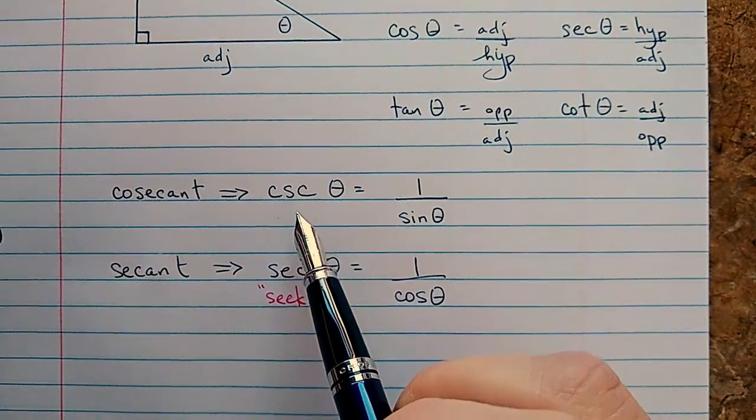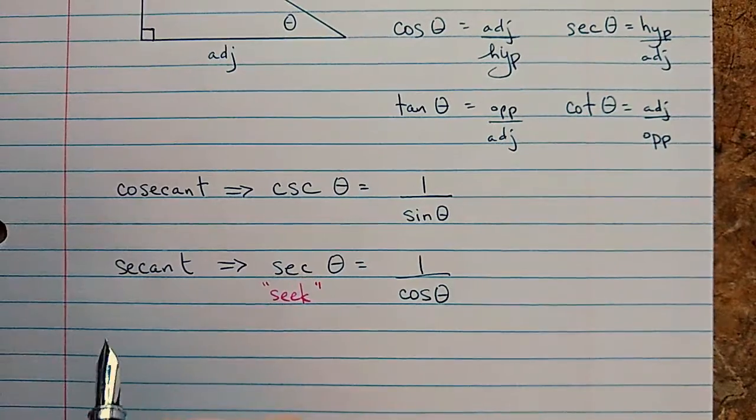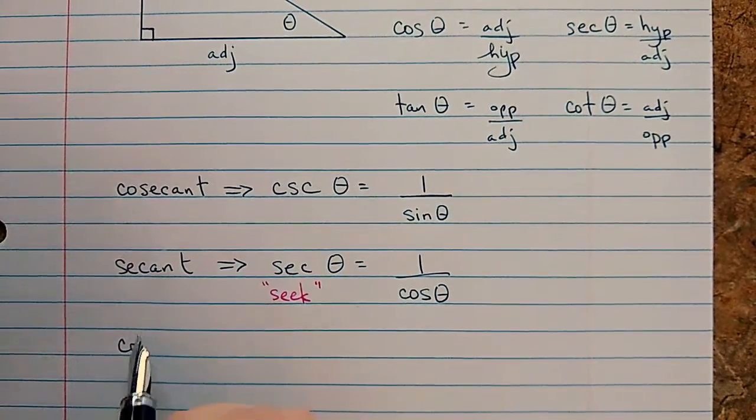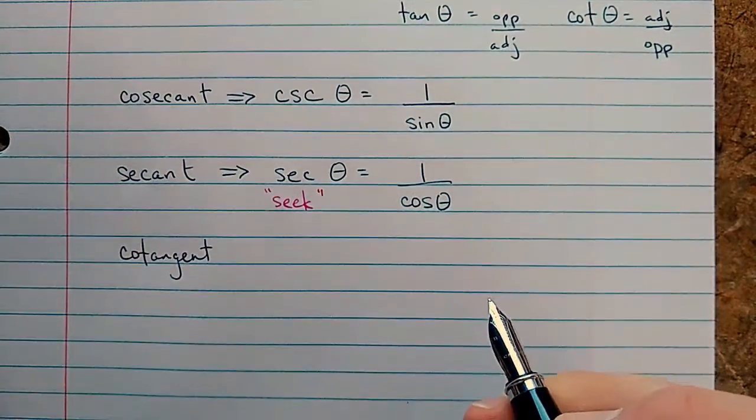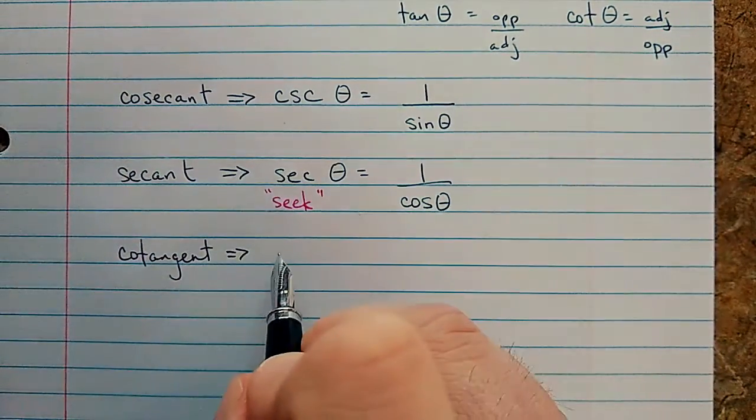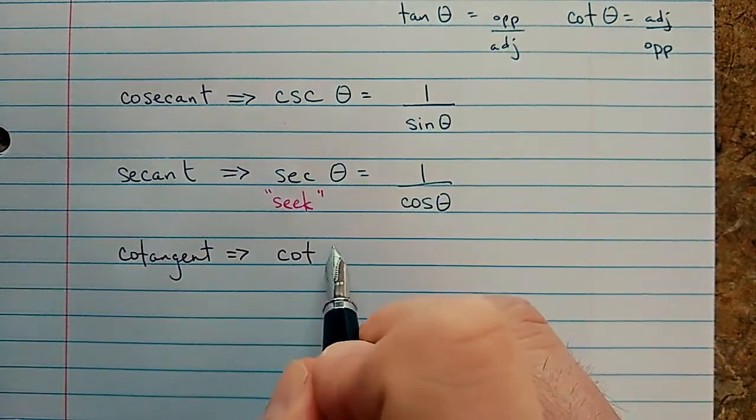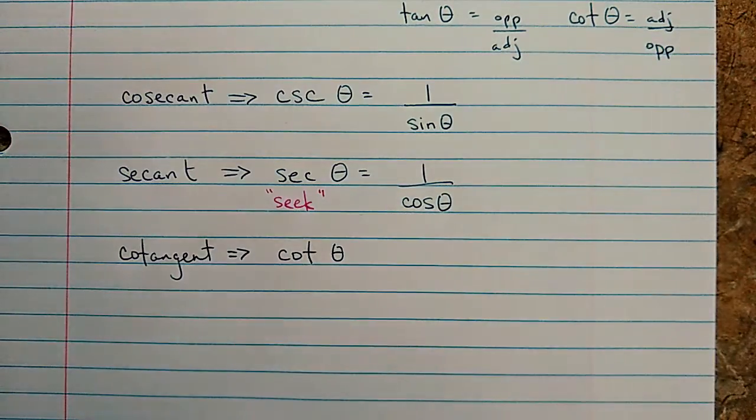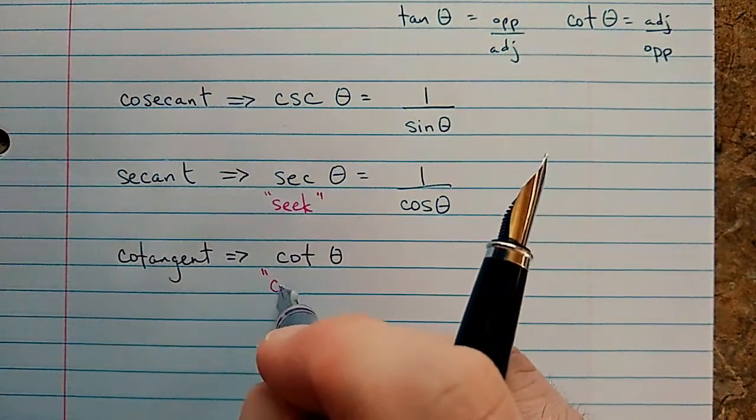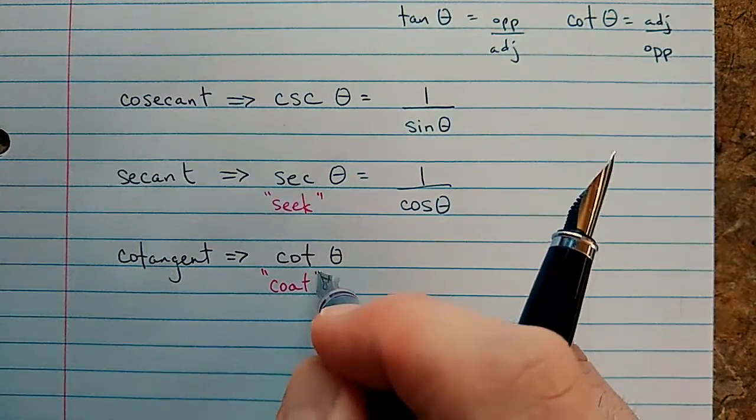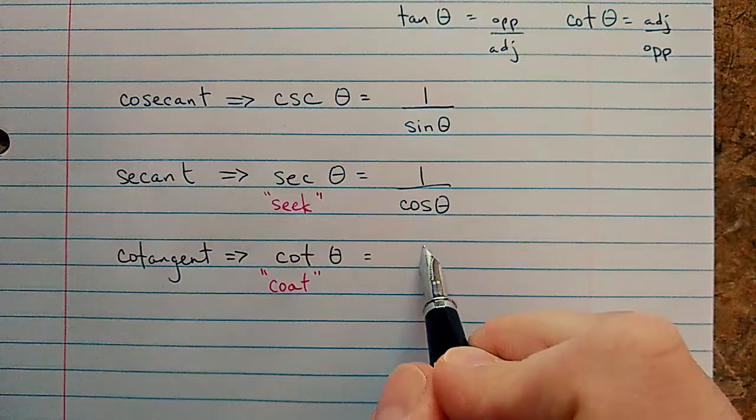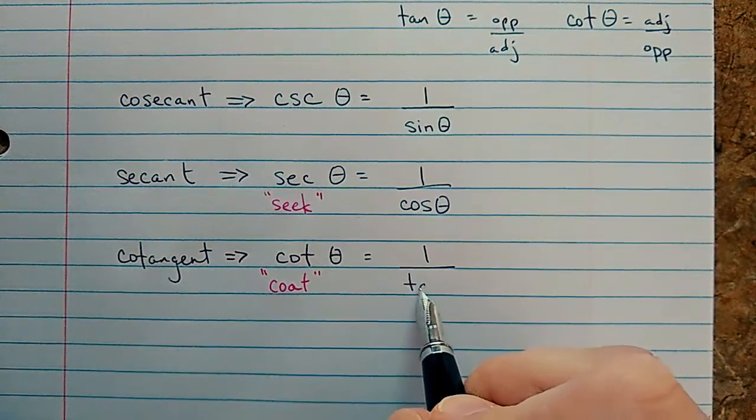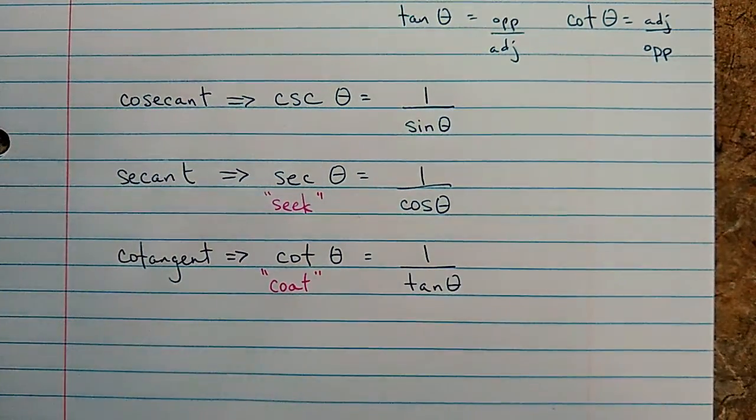We don't really do that with this one because it doesn't sound very nice. We also have the cotangent. C-O-T. And for that one, we usually say the word coat, like the kind you wear. So coat theta is one over the tangent of theta.